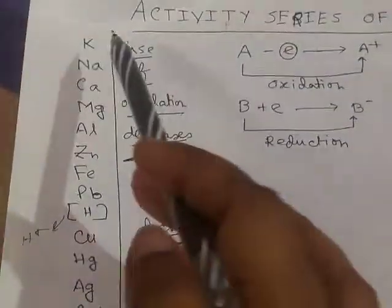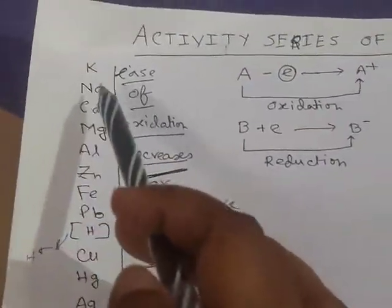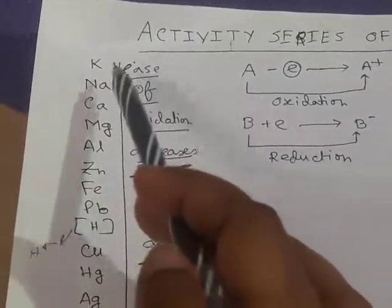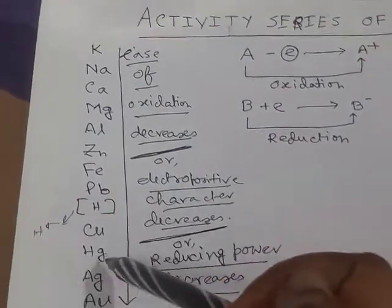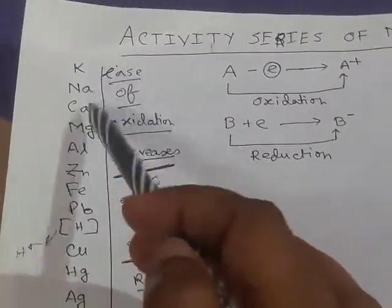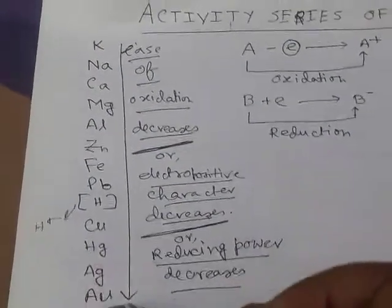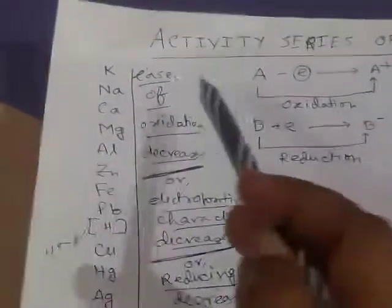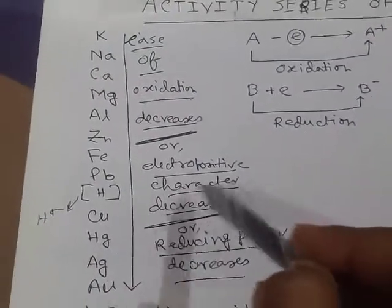These metals at the top can be oxidized easily. If we move down the series from potassium to aurum, the ease of oxidation decreases — that is, their capability of forming positive ions decreases. Potassium can form K⁺ ions at a much higher rate than copper or mercury. So elements at the top are easily oxidized, while elements at the lower portion can be reduced easily.